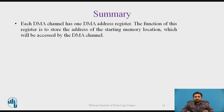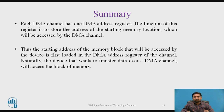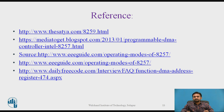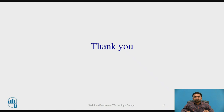Summary: each DMA channel has one DMA address register, and the function of this register is to store the address of the starting memory location which will be accessed by the DMA channel. The starting address of the memory block to be accessed by the device is first loaded into the DMA address register of the channel. The device that wants to transfer data over a DMA channel will access the block of memory. These are the references used. Thank you.